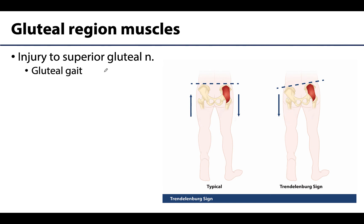If you have injury to the superior gluteal nerve, you can have a presentation referred to as the gluteal gait or gluteus medius limp, which compensates for weakened abduction. For example, if you have damage to the superior gluteal nerve on the right side, this would not allow the right gluteus medius and minimus to contract for stabilization when you lift your left foot. In the typical case, the right medius and minimus contract when you lift the left foot, abducting to stabilize the hip. Without that contraction, the hip would dip on the uninjured side because that side is not stabilizing.